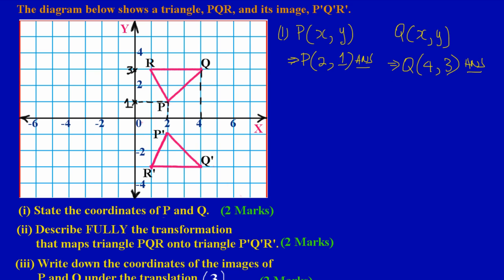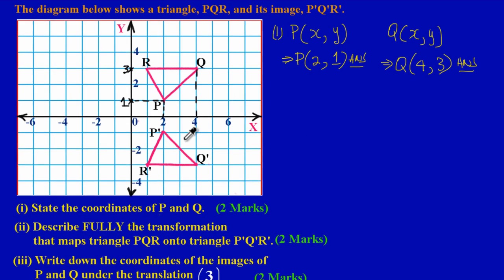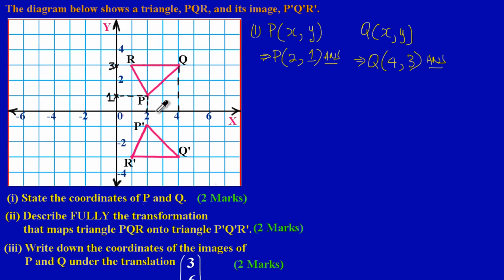In part 2 they are asking us to describe fully the transformation that maps triangle PQR onto triangle P prime Q prime R prime, its image. I can look at it and tell you it's a reflection in the x-axis, but first let's look at the concept behind it and see how we can prove that it's really a reflection. There are a few characteristics of a reflection that we have to bear in mind.